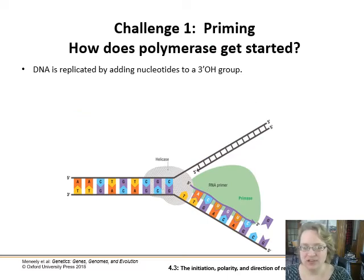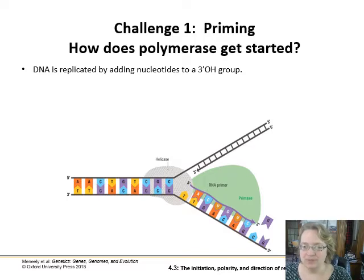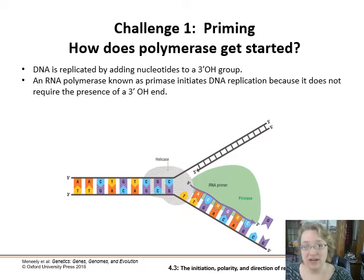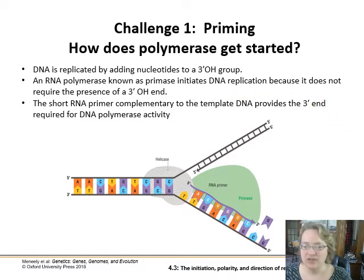Challenge one: DNA polymerase actually needs a double-stranded section of DNA to get started — it can't begin from a single strand. The solution is that another enzyme called RNA primase comes in and adds a short section of RNA to the DNA strand, making it double-stranded. Primase initiates replication because it doesn't require a three-prime OH end to connect to. This little primer is built complementary to the template DNA, providing a three-prime end that DNA polymerase can latch onto.